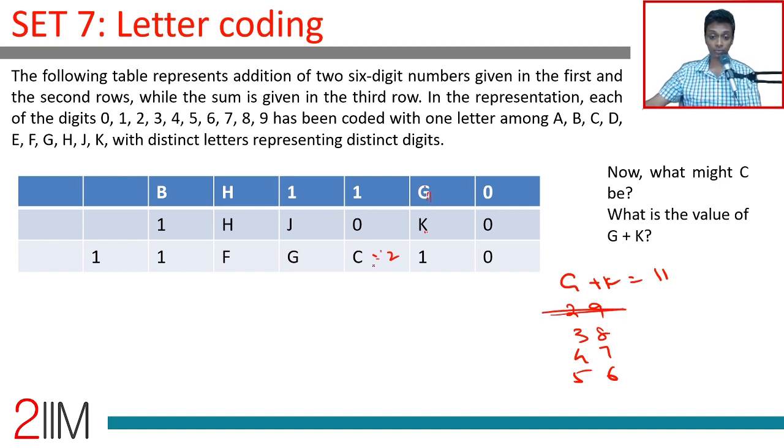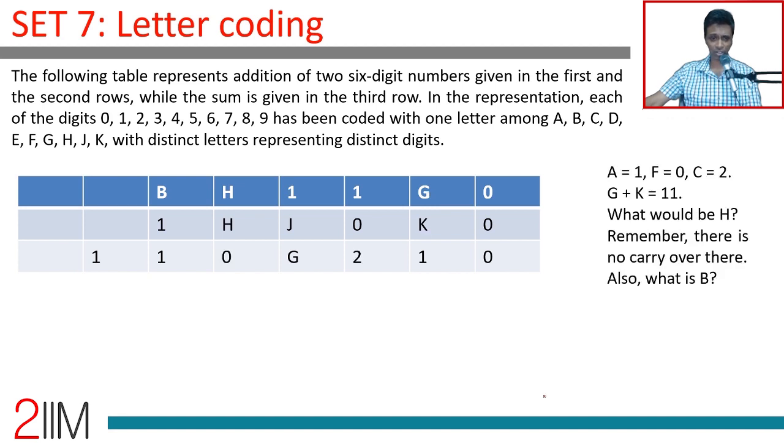But maybe we can eliminate some straight away. C is 2. So G and K cannot be 2. H is 5. So G and K cannot be 5. Can we eliminate 3, 8, 4, 7 also? I'm not able to find a 3, 8 and a 4, 7. And so we're just going step by step.